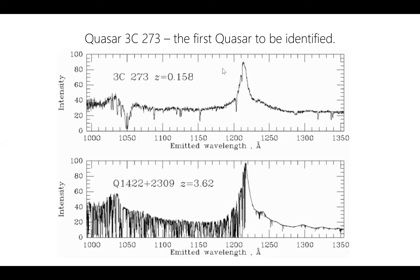Here are the spectra of two different quasars. The top one is the first quasar ever identified by Maarten Schmidt in 1963 — a fairly nearby quasar with only a few absorption features, because there isn't much cosmic web between us and it. The bottom panel shows a much more distant quasar with a lot of absorption lines — all of those come from the cosmic web.